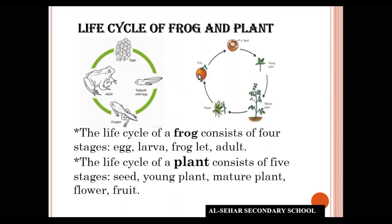Next, the life cycle of plant consists of five stages. First, seed. 25 to 30 days, seed converts into young plant. 20 to 25 days, young plant converts into mature plant. 20 to 30 days, mature plant grows a flower.